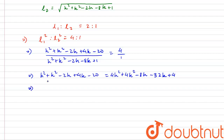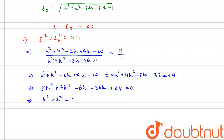Rearranging by moving all h² and k² terms to one side gives 3h² + 3k² - 6h - 36k + 24 = 0. Dividing everything by 3, we get h² + k² - 2h - 12k + 8 = 0.